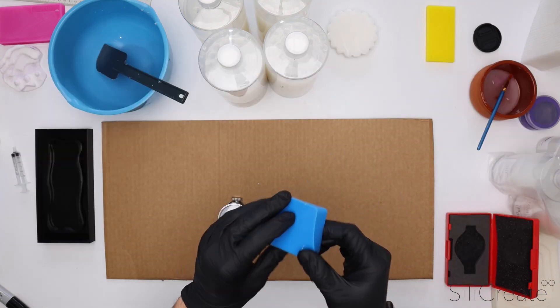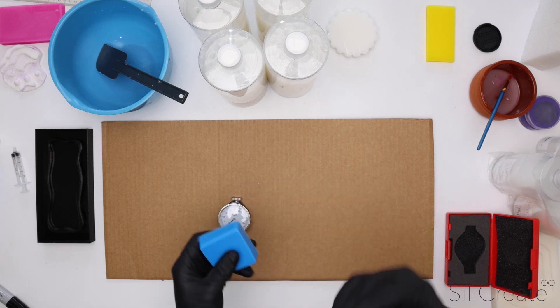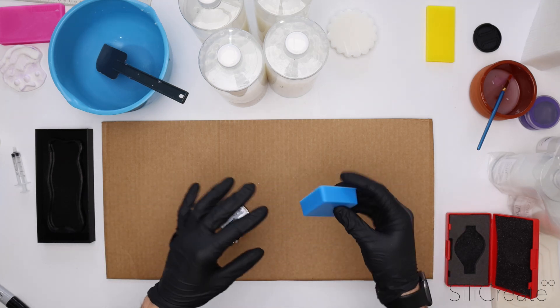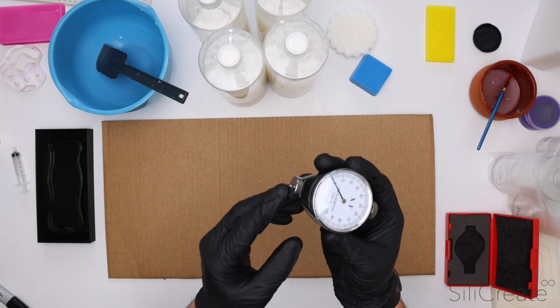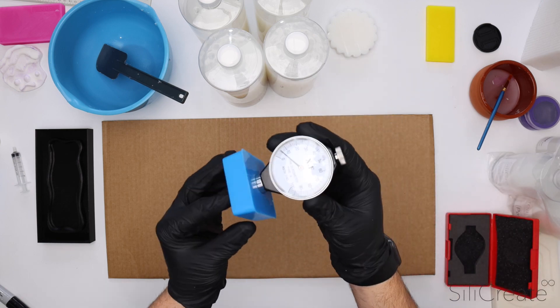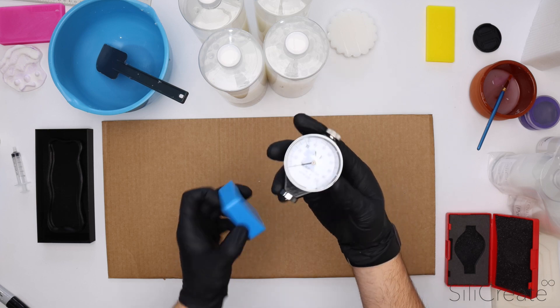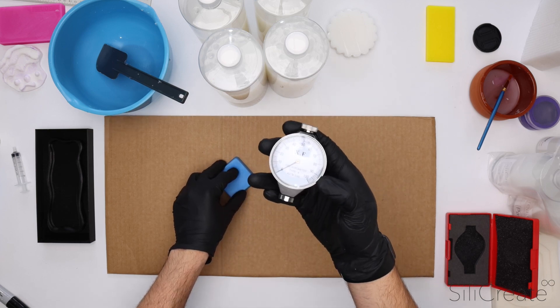So most of the time we're working in A, we do have a couple of double zero silicons as well. In order to measure the shore hardness we use a device called a durometer. It's got a little needle here and when you apply it to a material it'll tell you the shore hardness. This one is made for the A scale.